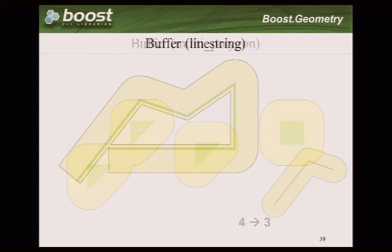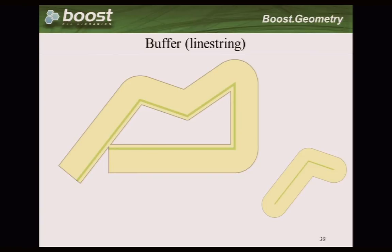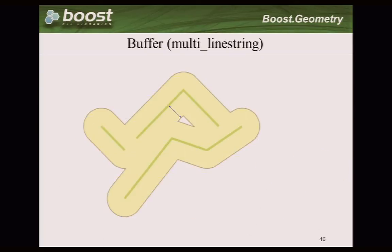This is showing how the buffer will look like. We can specify a distance strategy for left and right, so we support asymmetric distance. Also the end strategy so we have straight borders or round borders, and also specify the joint strategy so you have round corners or sharp corners or you can specify your own strategy, for example doing things like this if you want. That's the lower level part of the library.